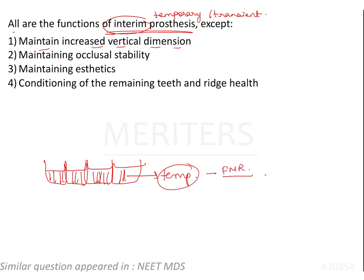To maintain increased vertical dimension, you need temporary restorations. To maintain occlusal stability: if there are teeth which are worn out against each other and you have temporaries on both sides, then you can enhance the occlusion in between them.